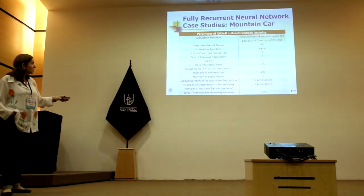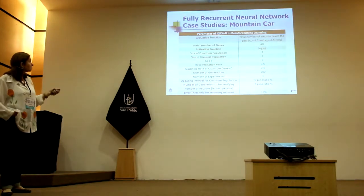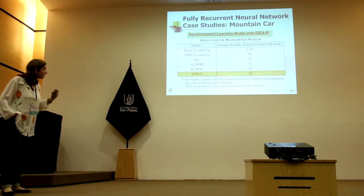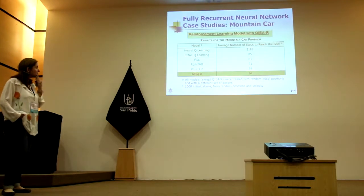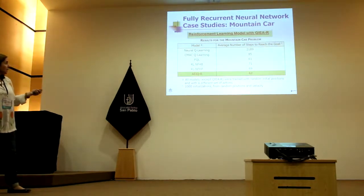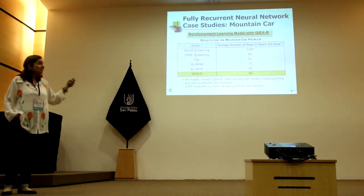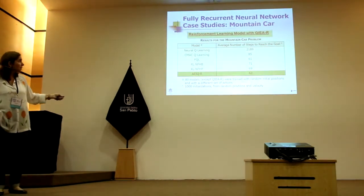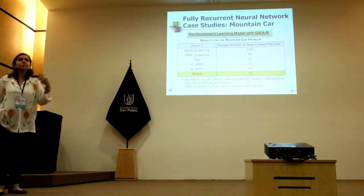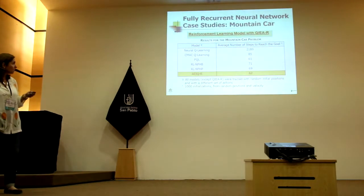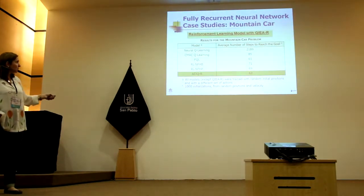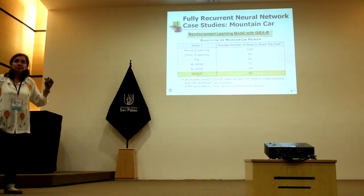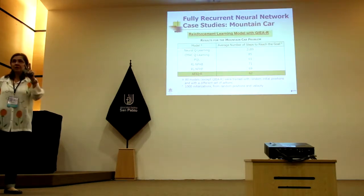This is the number of generations used for validation. Here are some other reinforcement learning models known in the literature — some old ones developed previously. The average number of steps to reach the goal shows it has learned after some interaction. Autonomously, it learned and goes faster than all other reinforcement learning models. All models, except the quantum, were trained with random initial positions, while the quantum was initialized only in two positions.